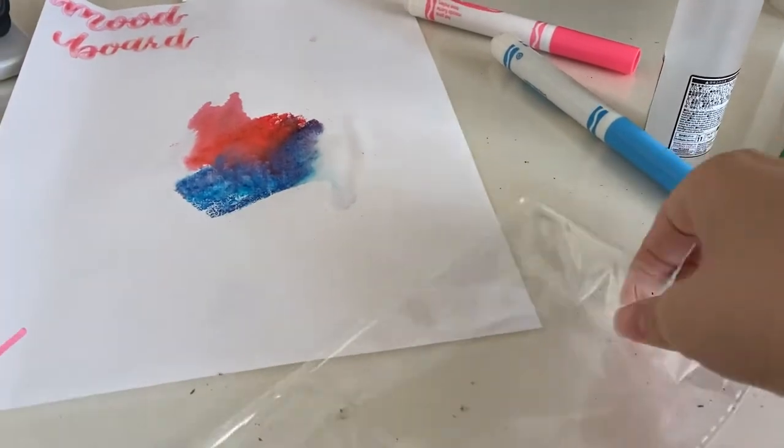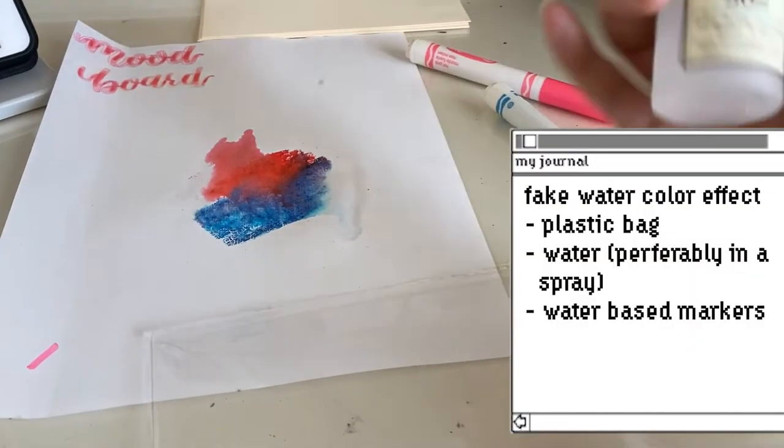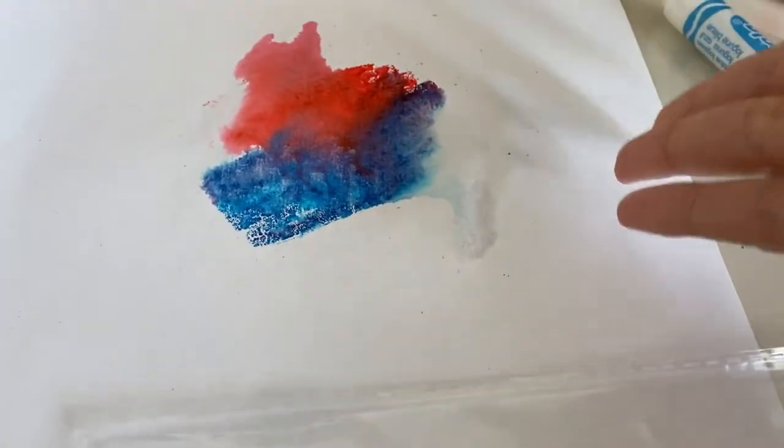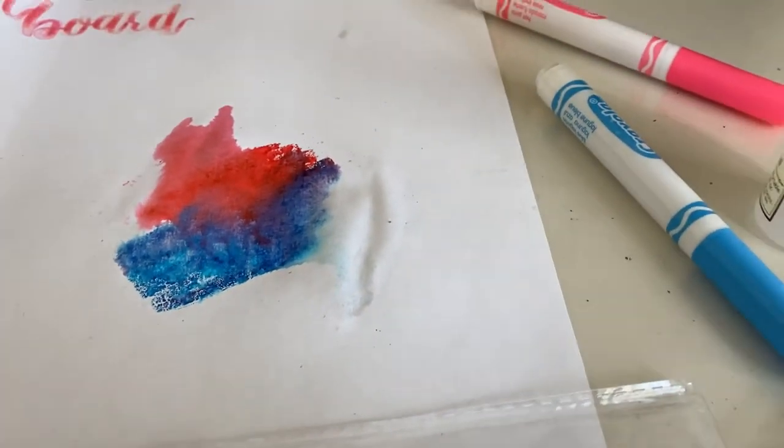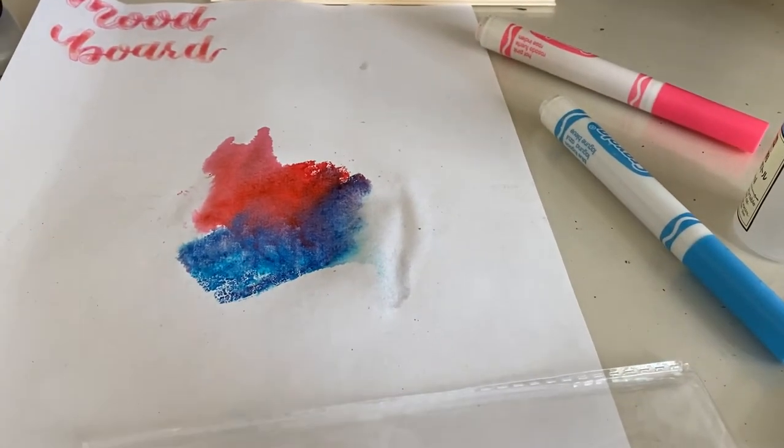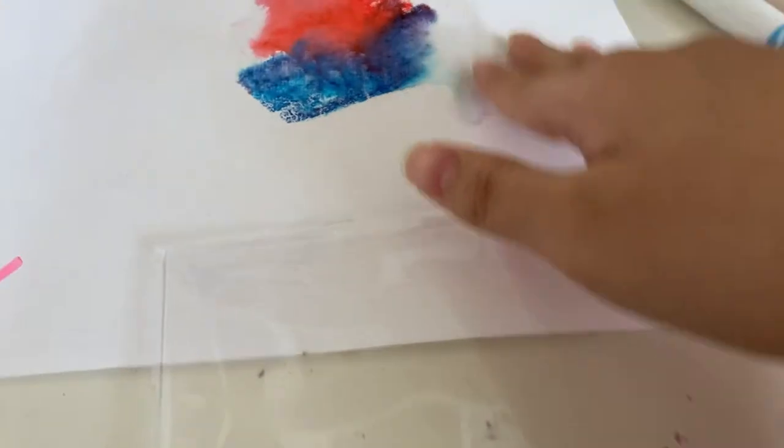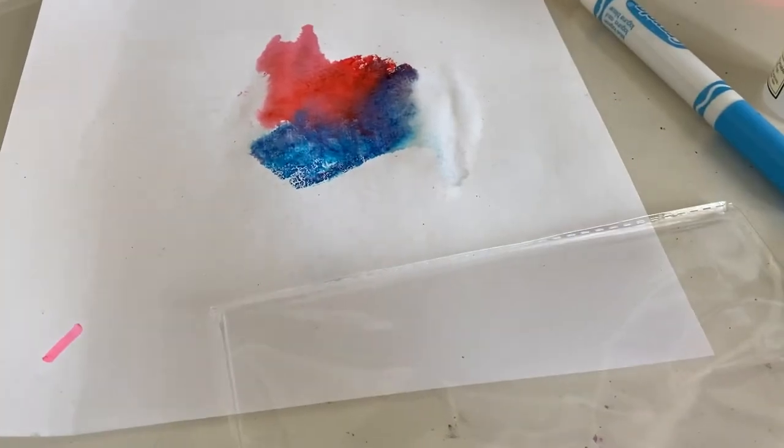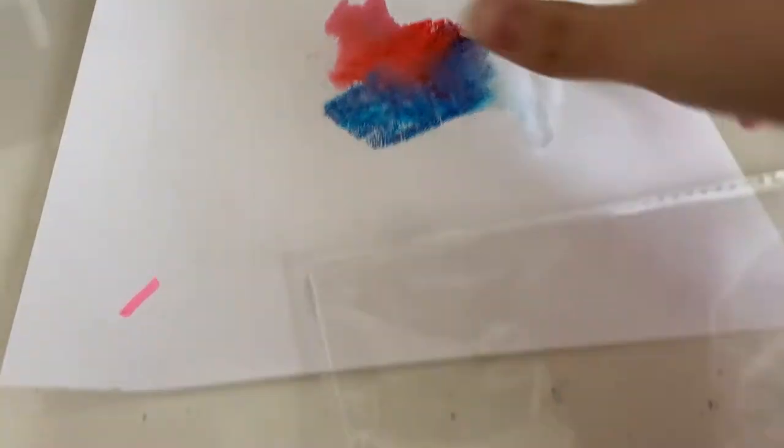So right now I have a plastic bag and then this water sprayer and then I also have some markers. As you can see from the blob that I just made, I'm going to try make this makeshift pretend watercolor effect on it. Later on I'm going to replace this printer paper with watercolor paper so it doesn't leak through.